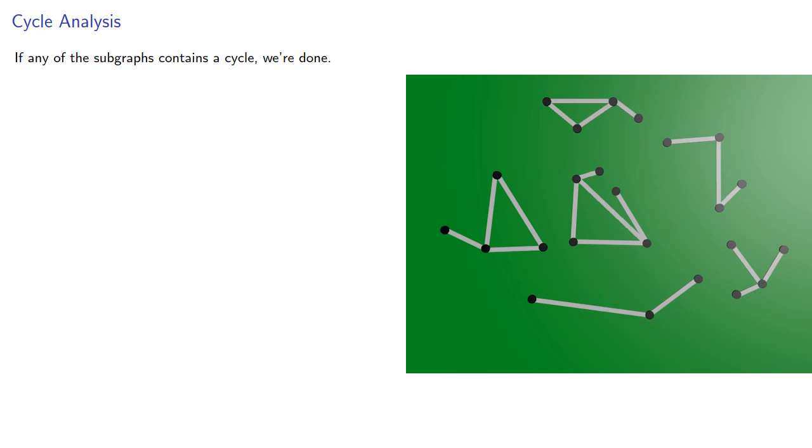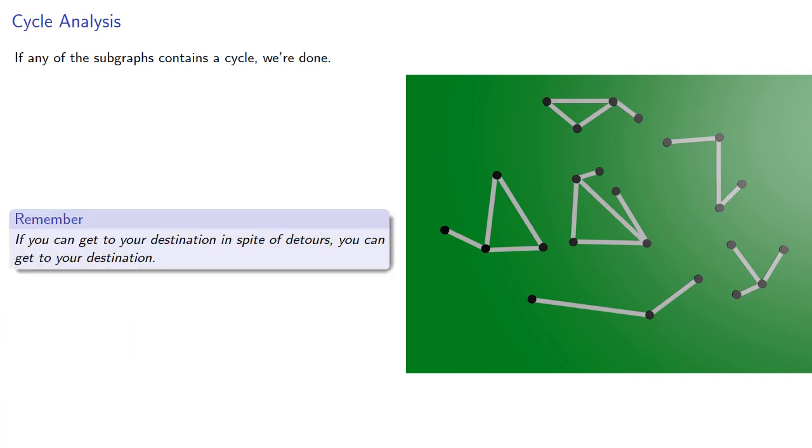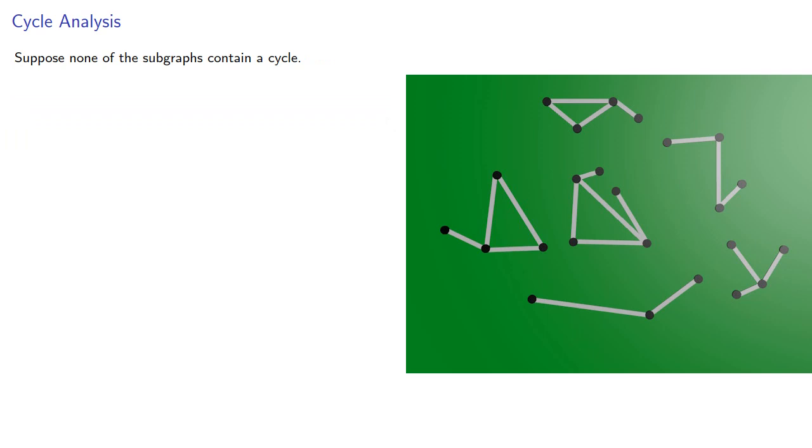But in proof, it's important to remember, if you can get to your destination in spite of detours, you can get to your destination. So suppose none of the subgraphs contain a cycle.